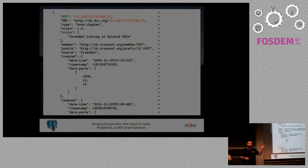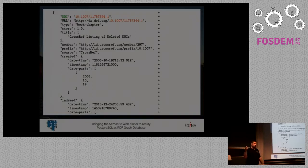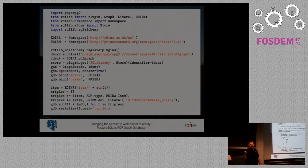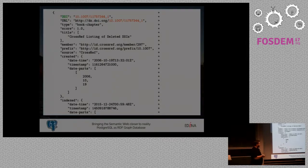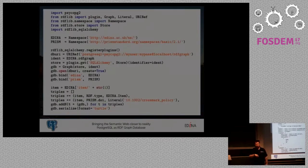A DOI is basically a pointer that redirects you to that object. It can be used as a URL — this URL only points at the resolver, which is dx.doi.org, and you ask the resolver to give you a redirect to the actual object. We also have other metadata like title, created date, index date, and so on.